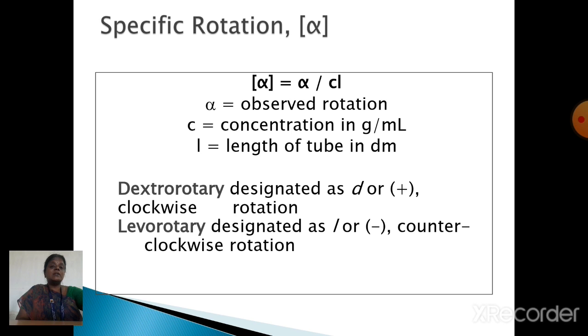If you have a value with the plus sign, that means it is definitely dextrorotatory or clockwise rotation. If the value is negative, that is called levorotatory or anticlockwise rotation.